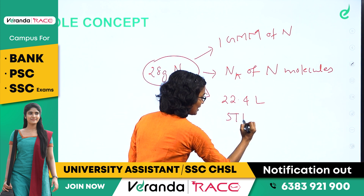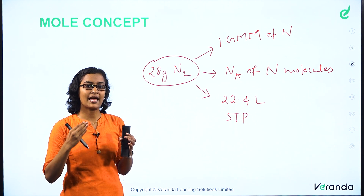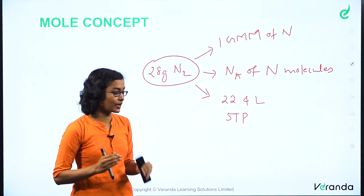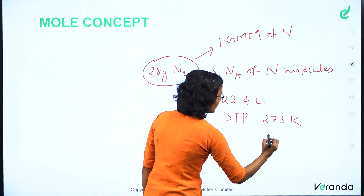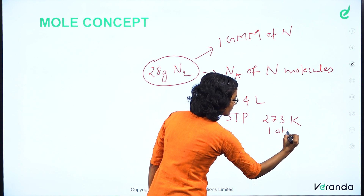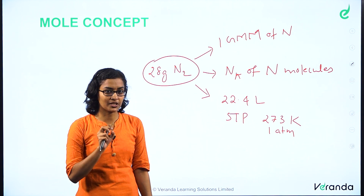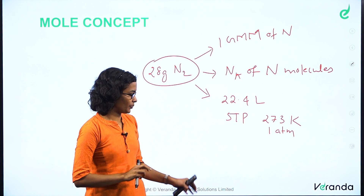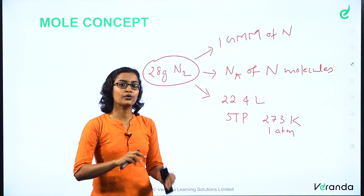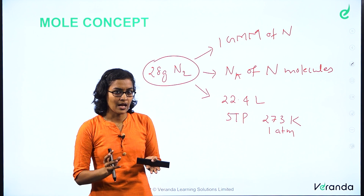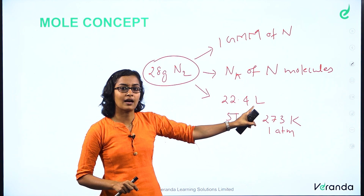This is called STP — standard temperature and pressure condition. Standard temperature and pressure condition means 273 Kelvin and 1 atmosphere pressure. In this standard temperature and pressure condition, one mole of molecules of any gas occupies 22.4 litres.